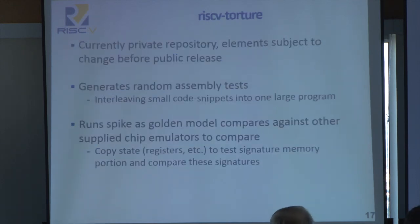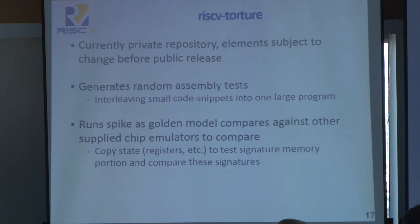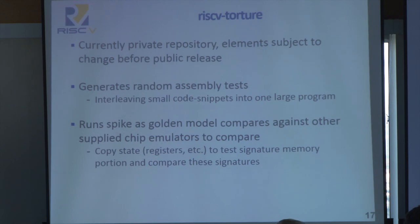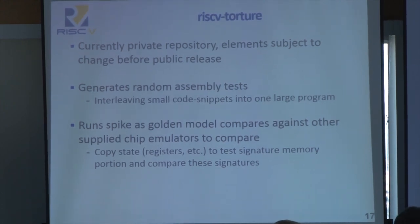Finally, this has yet to be released, but we plan to release it sometime soon in the future. We are currently developing a RISC-V torture test suite, which generates random assembly tests using small code snippets that are interleaved together, and is able to run them over an extensive period of time. What this program does is run spike as a golden model, emit a test signature which is pre-programmed to copy all of the state registers, vector machine state, etc., into that test signature, and then test it against some other processor emulator and compare it for final results. That would be the conclusion of the presentation. I will be glad to help you with any of your RISC-V tests questions during the regular bootcamp lab session. Thank you.